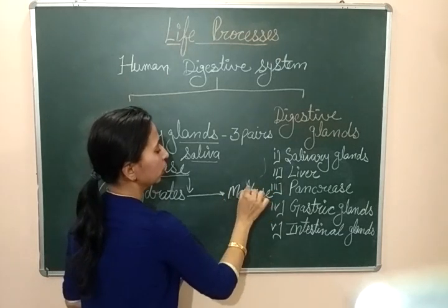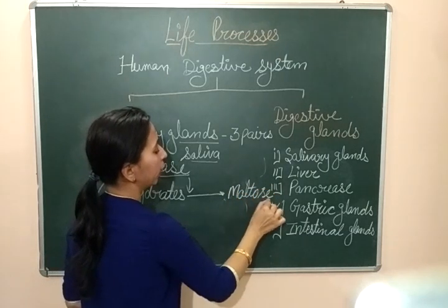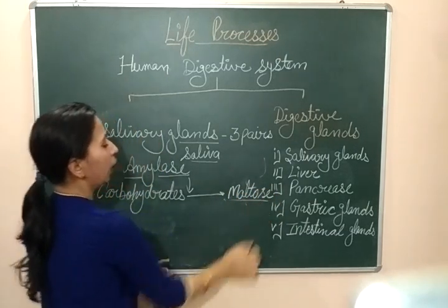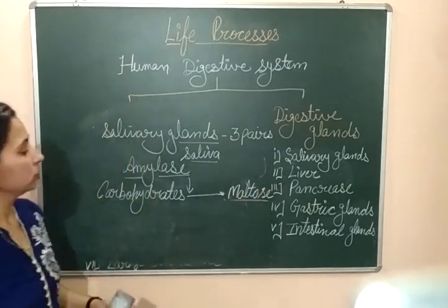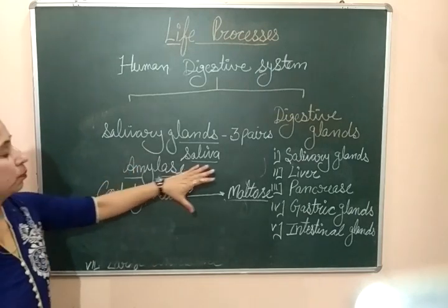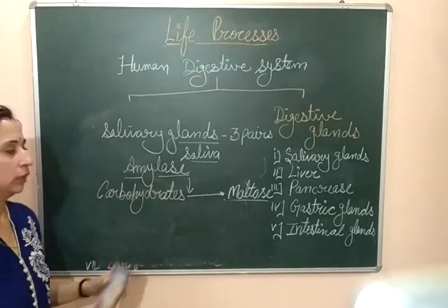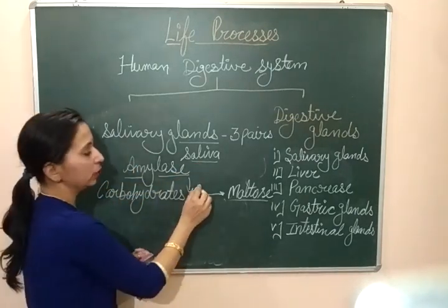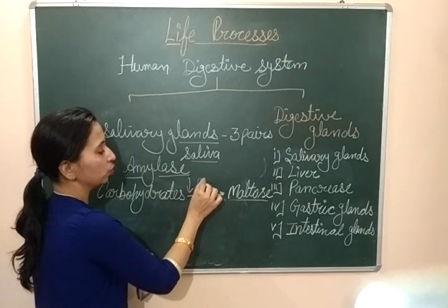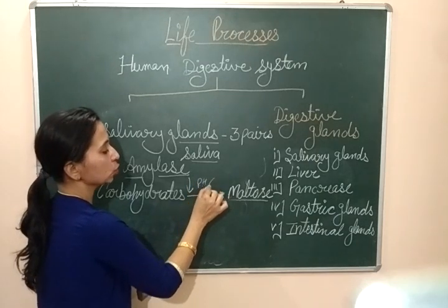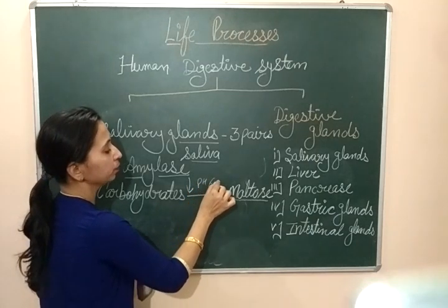Carbohydrates are converted into a simpler form, into maltose, which is the simpler form of carbohydrate. The amylase enzyme works at a specific pH of 6.5.